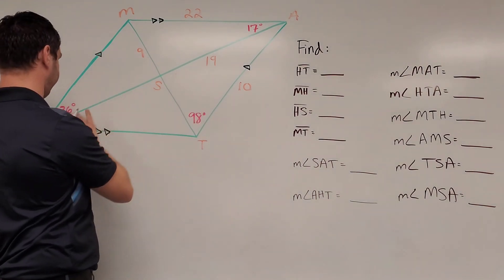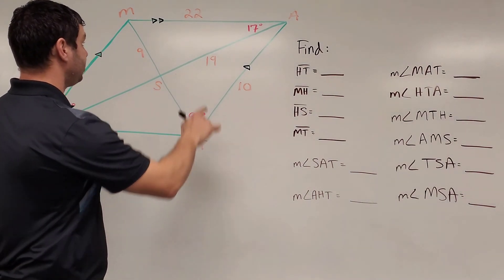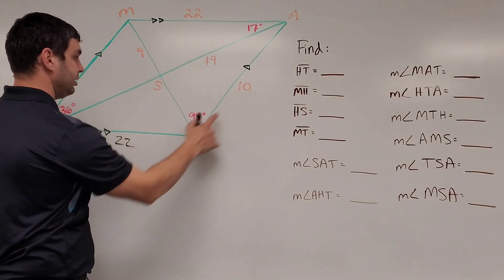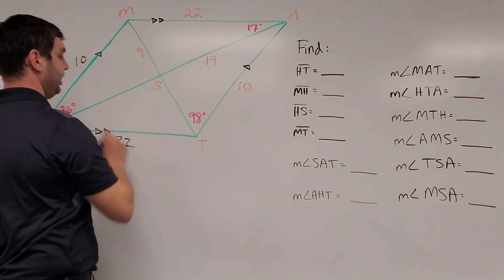First off, I'm going to take care of all these different orange lengths. And to start off with, we know in a parallelogram the opposite sides are going to be congruent. So this would be 22, this is 10, this is also 10.